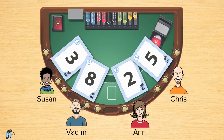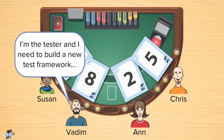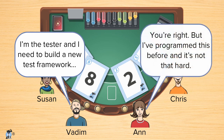Anybody can talk, but in this case I would really want to hear from Vadim and Ann. Vadim might say, "I'm the tester on this project and this is going to be really hard to test — I need to build a new test framework." Ann says, "Vadim is right, my 2 is too low. But I've programmed this type of thing before and it's not that hard, so I'm coming up, but not all the way to an 8."